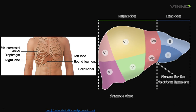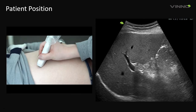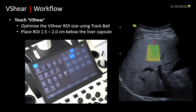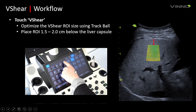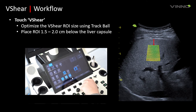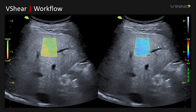On the left you can see the probe position for the intercostal scan, and on the right a 2D image of the intercostal scan plane showing the right lobe of the liver, segments 7 or 8. Once this image is acquired, on the touch screen touch VShear to enable the VShear ROI function. Position the ROI approximately 1.5 to 2 centimeters below the liver capsule, as shown with the red arrow. Enable the reliability map and motion stability index, ensure the ROI is perpendicular and then parallel to the liver capsule with the upper plane of the VShear ROI.